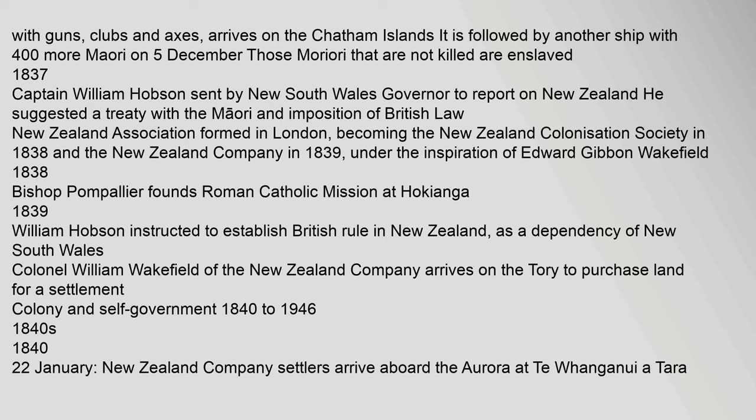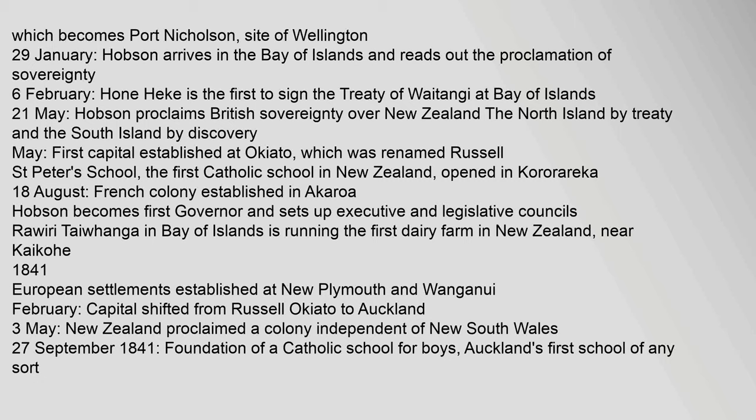Colony and self-government, 1840 to 1946. 1840s. 1840, 22 January: New Zealand Company settlers arrive aboard the Aurora at Te Whanganui-a-Tara, which becomes Port Nicholson, site of Wellington. 29 January: Hobson arrives in the Bay of Islands and reads out the Proclamation of Sovereignty. 6 February: Honheke is the first to sign the Treaty of Waitangi at Bay of Islands.